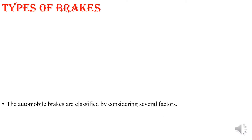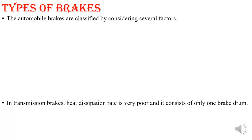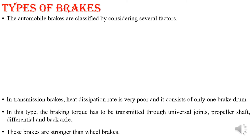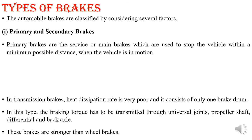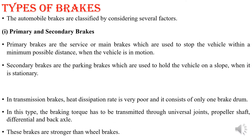Types of brake are classified by considering several factors. The first classification is primary and secondary brakes. Primary brakes are the normal brakes used when the vehicle is moving — to bring it to a stop or a lower speed within the minimum possible distance. Secondary brakes are your parking brakes, which hold the vehicle in a stationary condition or on a slope.